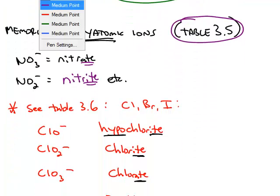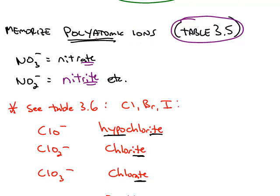Also, you need to memorize table 3.5 which gives you the polyatomic ions. Things like NO3 with a negative 1 charge is called nitrate, and NO2 with a negative 1 charge is called nitrite. Notice the greater number of oxygens gets that ate ending, compared to the one with fewer, that's the ite ending.